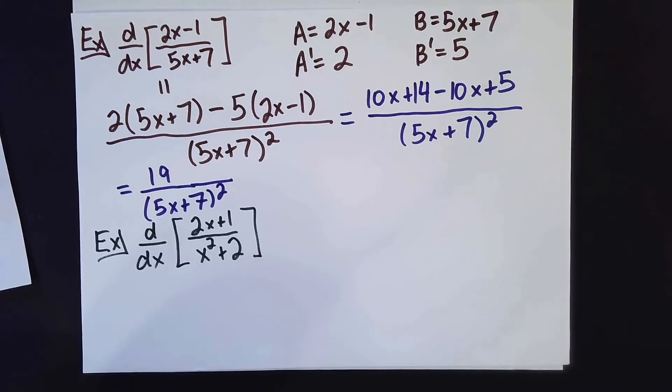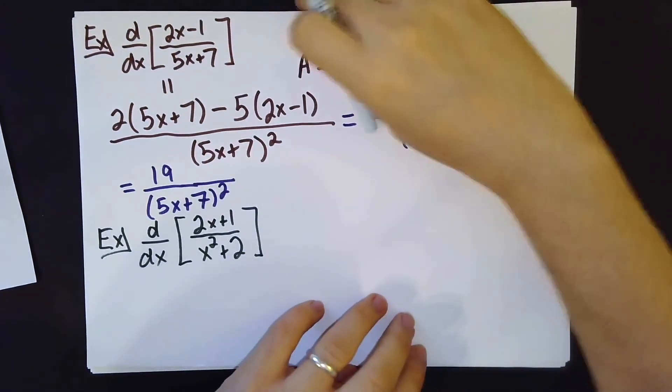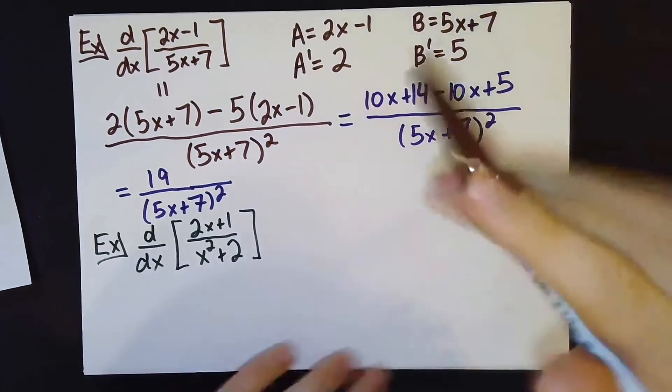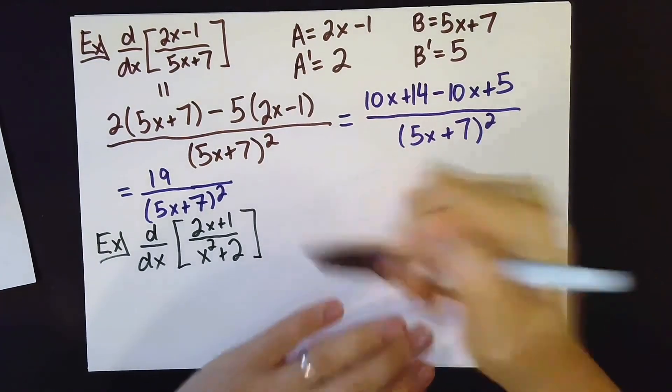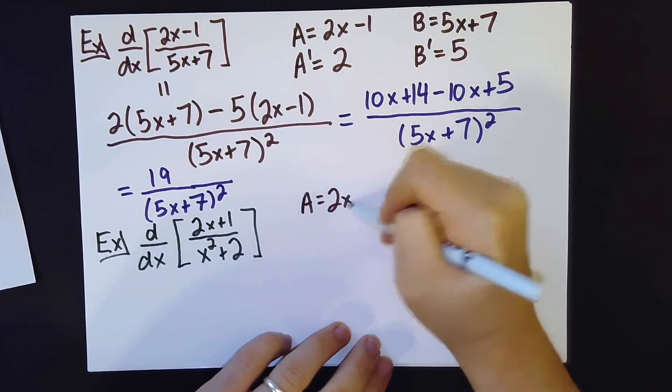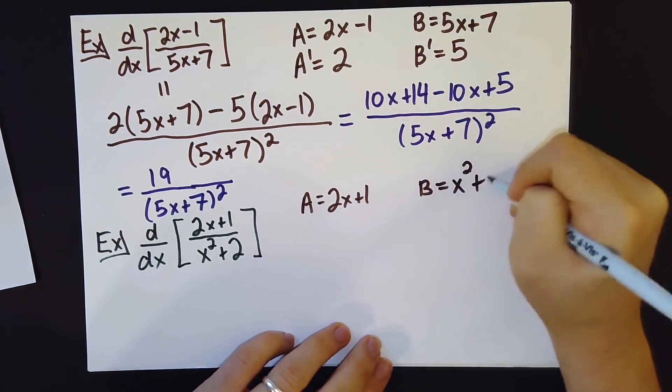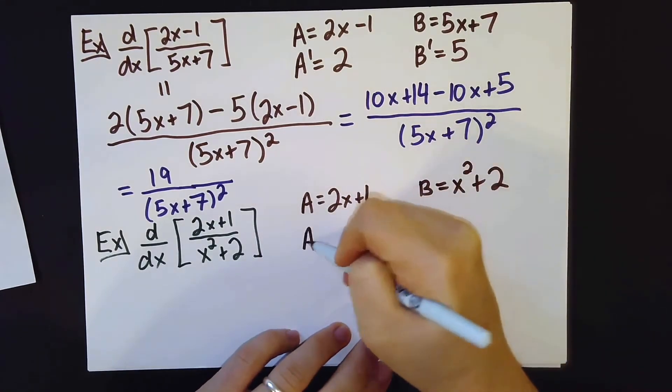Let's do another example. So here we have another fraction, so we're again going to use the quotient rule. In order to do that, I'm going to need to write down that this numerator here is a, the denominator here is x squared plus 2, and then write down their derivatives.